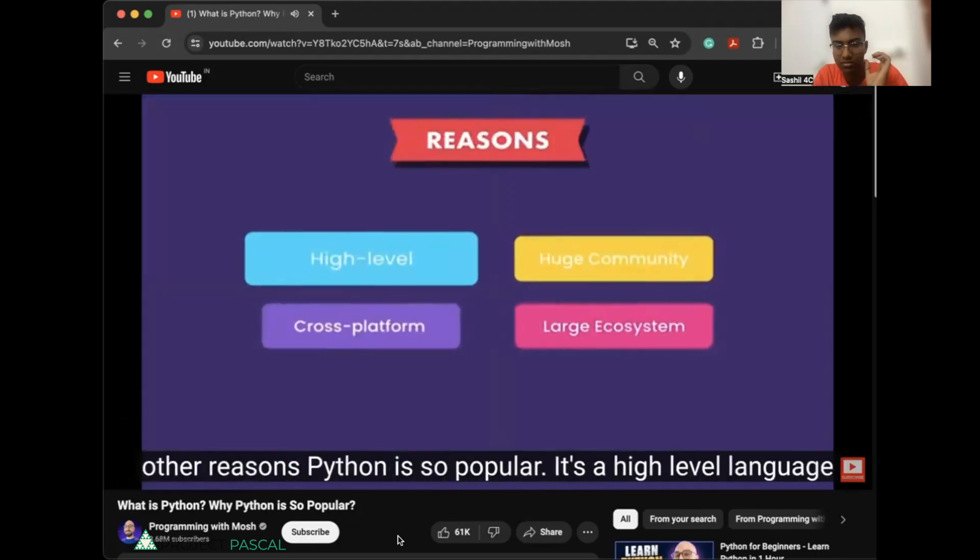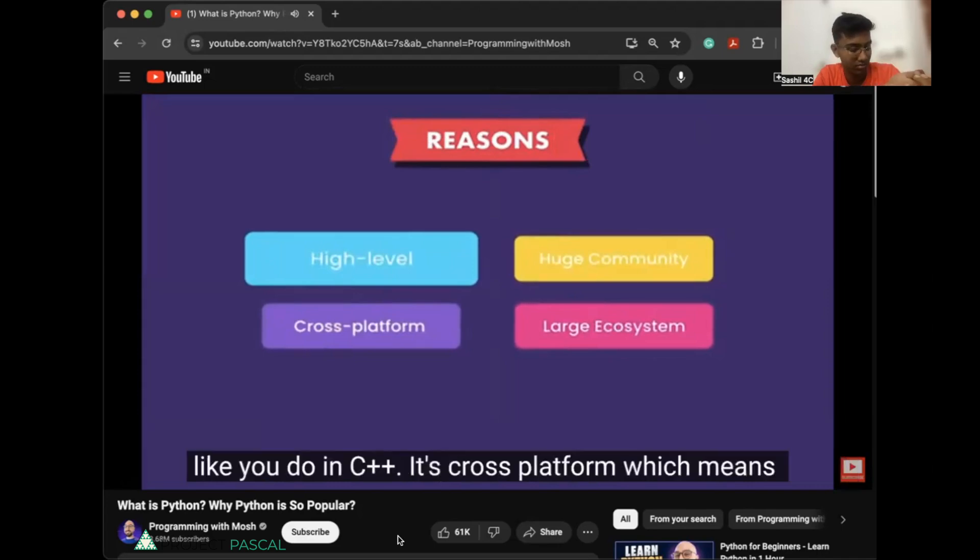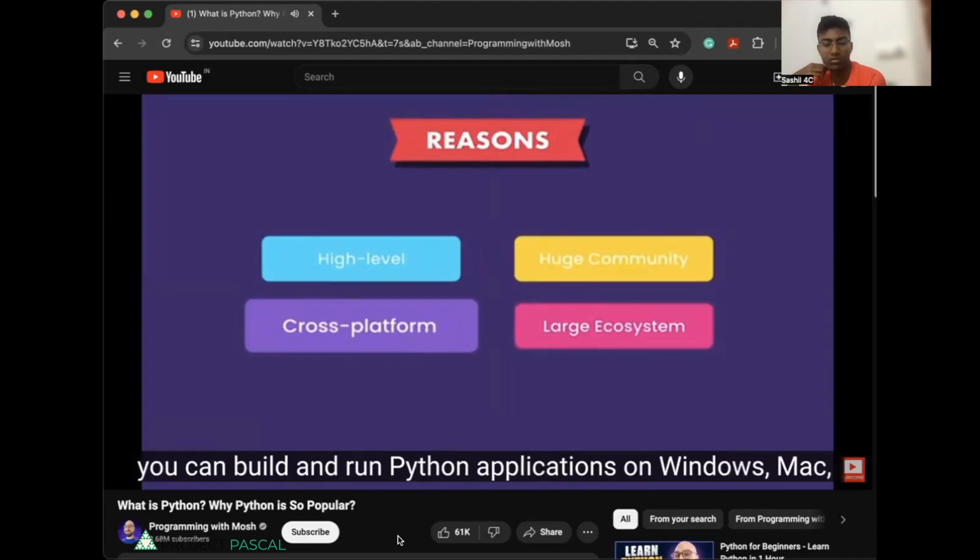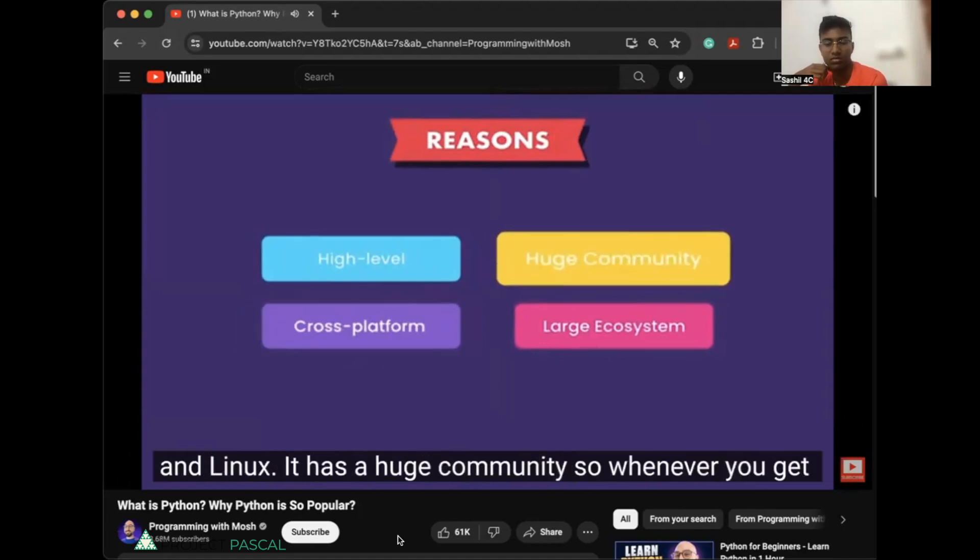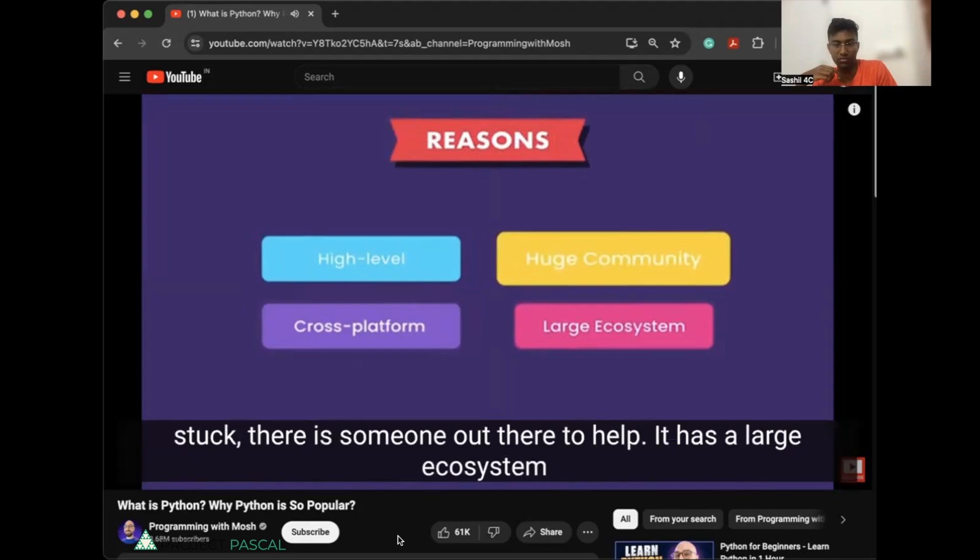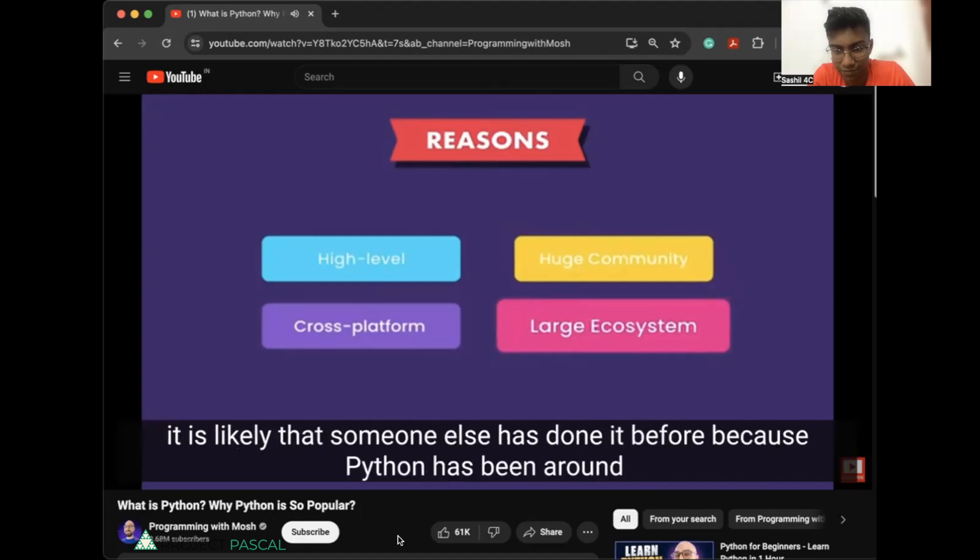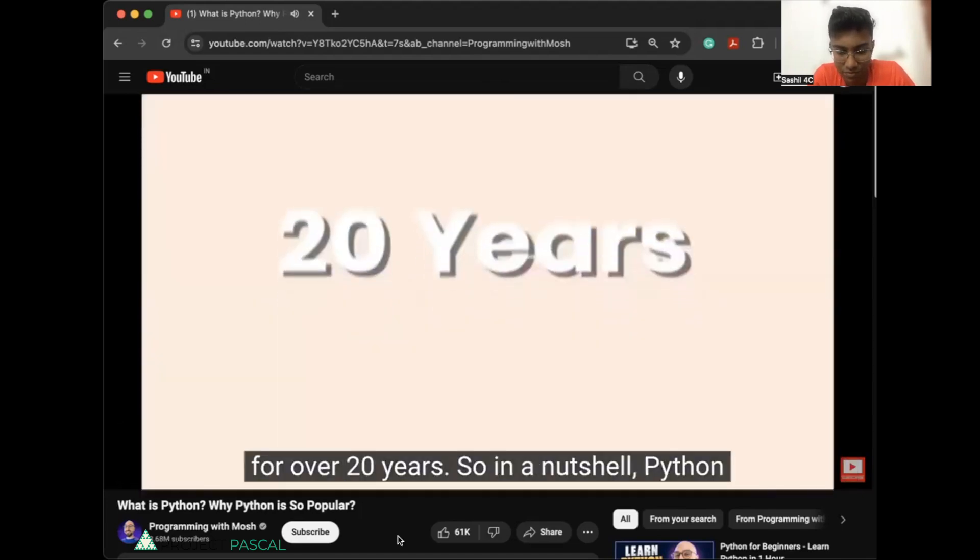Here are a few other reasons why Python is so popular. It's a high-level language, so you don't have to worry about complex tasks, such as memory management, like you do in C++. It's cross-platform, which means you can build and run Python applications on Windows, Mac, and Linux. It has a huge community, so whenever you get stuck, there's someone out there to help. It has a large ecosystem of libraries, frameworks, and tools, which means whatever you want to do, it is likely that someone else has done it before, because Python has been around for over 20 years.